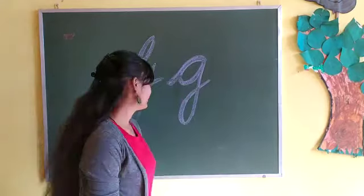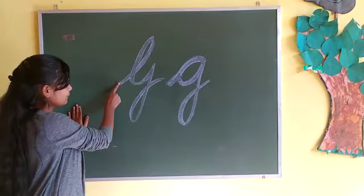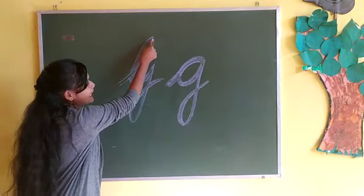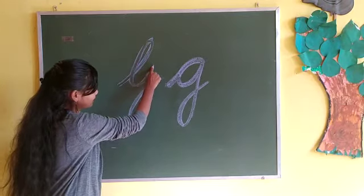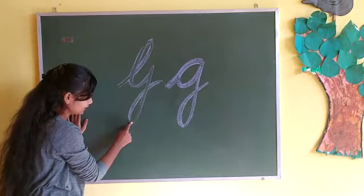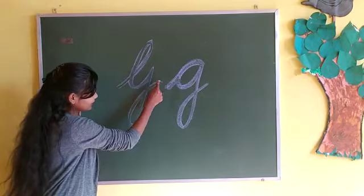Let's start. First we trace it. First we make a standing line, then loop, curl, up, down, slant, up, stop.